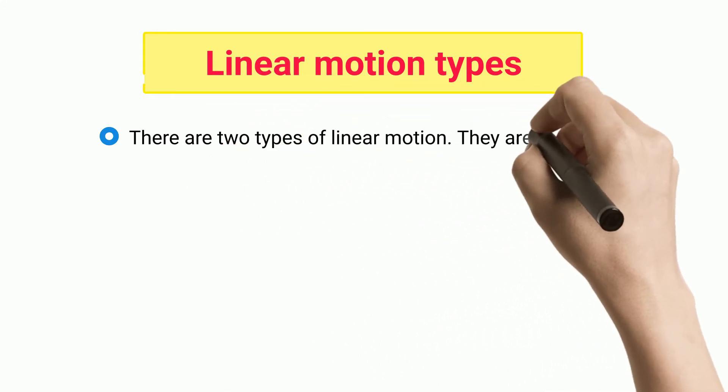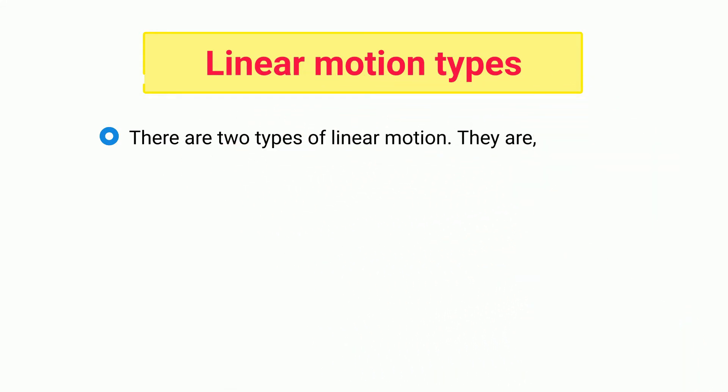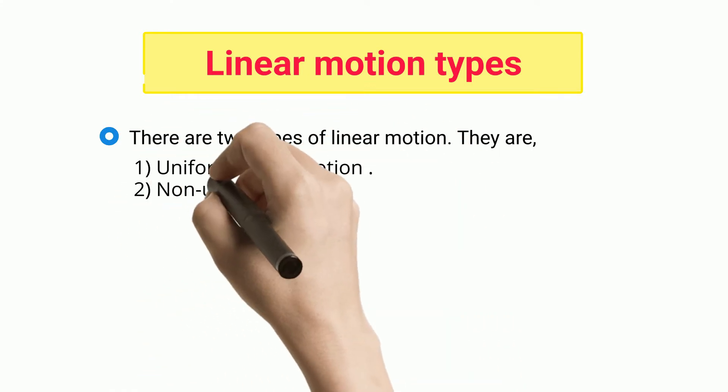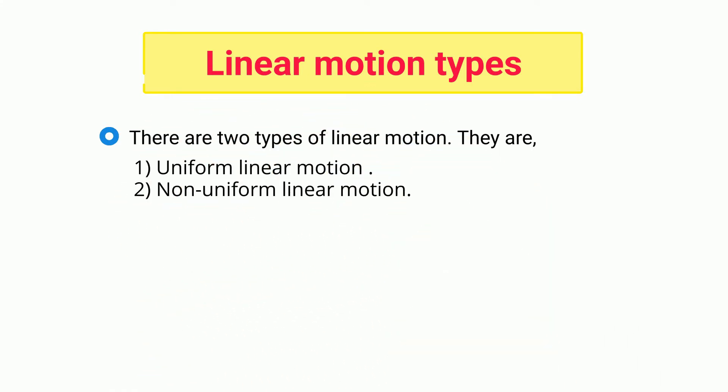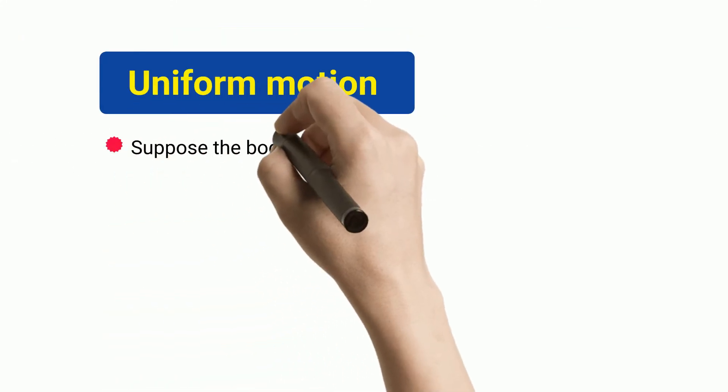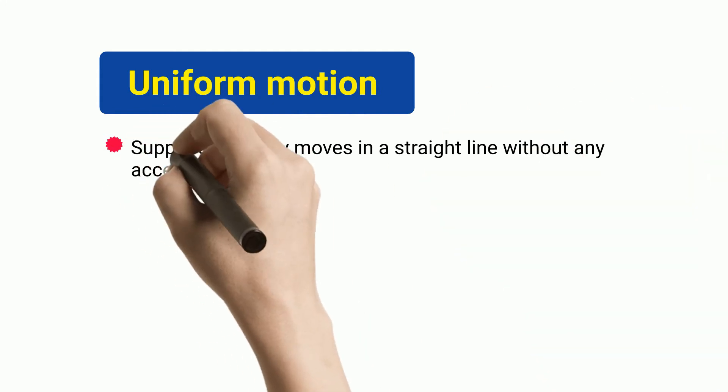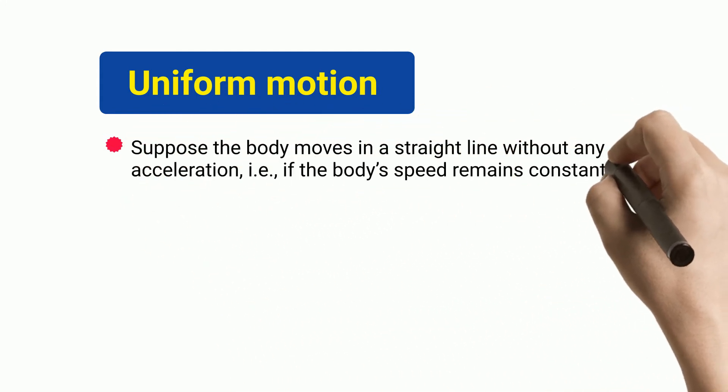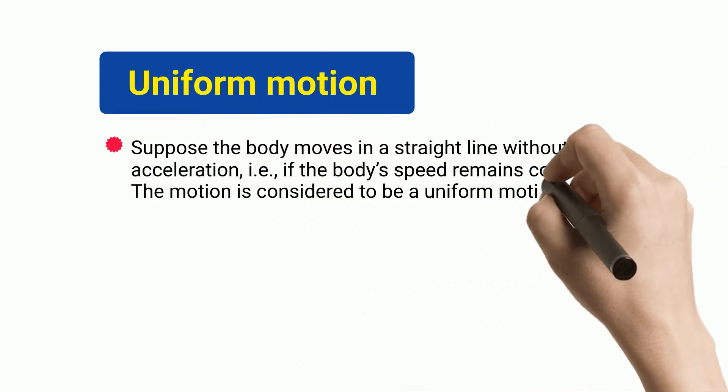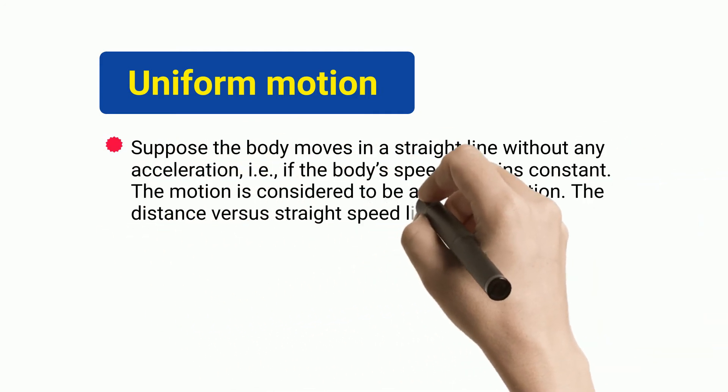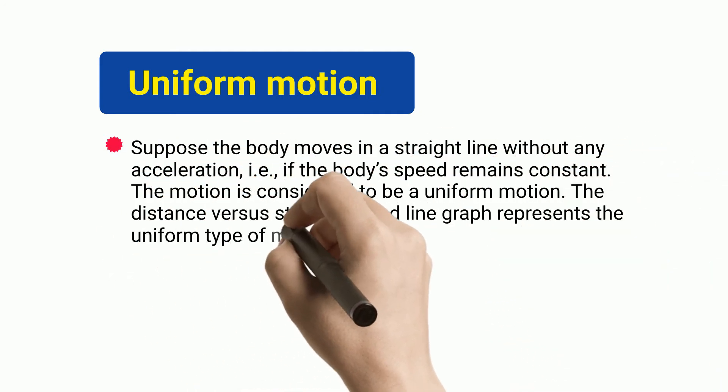Linear motion types: There are two types of linear motion. They are uniform linear motion and non-uniform linear motion. Uniform motion: suppose the body moves in a straight line without any acceleration, i.e., if the body's speed remains constant, the motion is considered to be uniform motion.